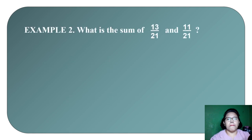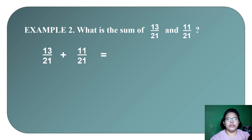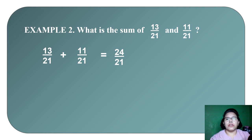Another example. Example 2: what is the sum of 13 twenty-firsts and 11 twenty-firsts? So, 13/21 plus 11/21 equals 24/21. Now take note — our answer is an improper fraction. To simplify this, we need to change the improper fraction into a mixed number.